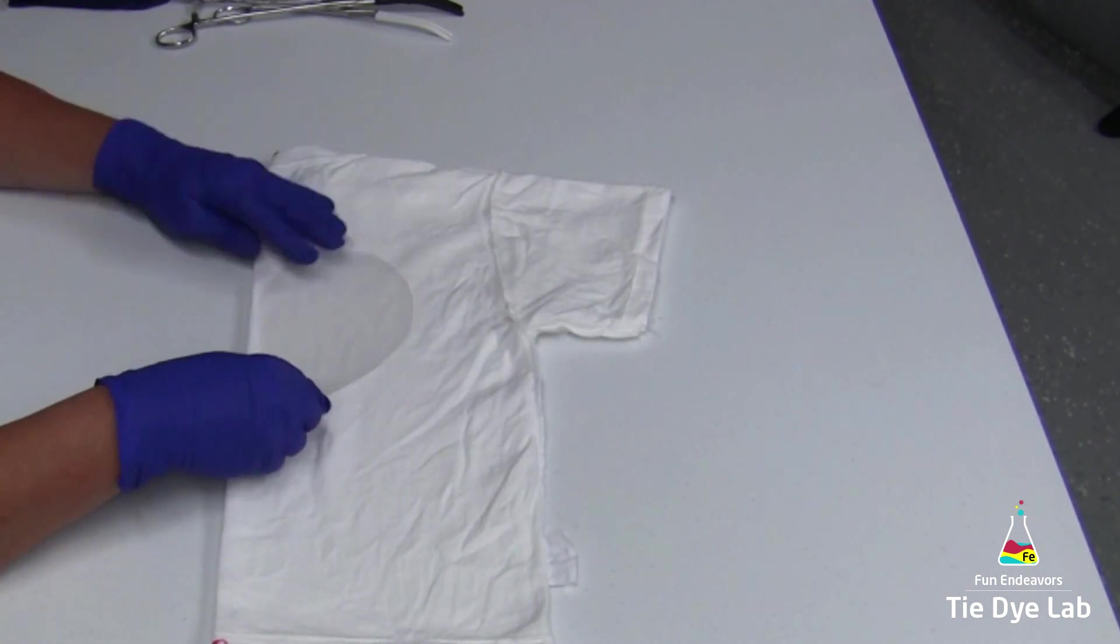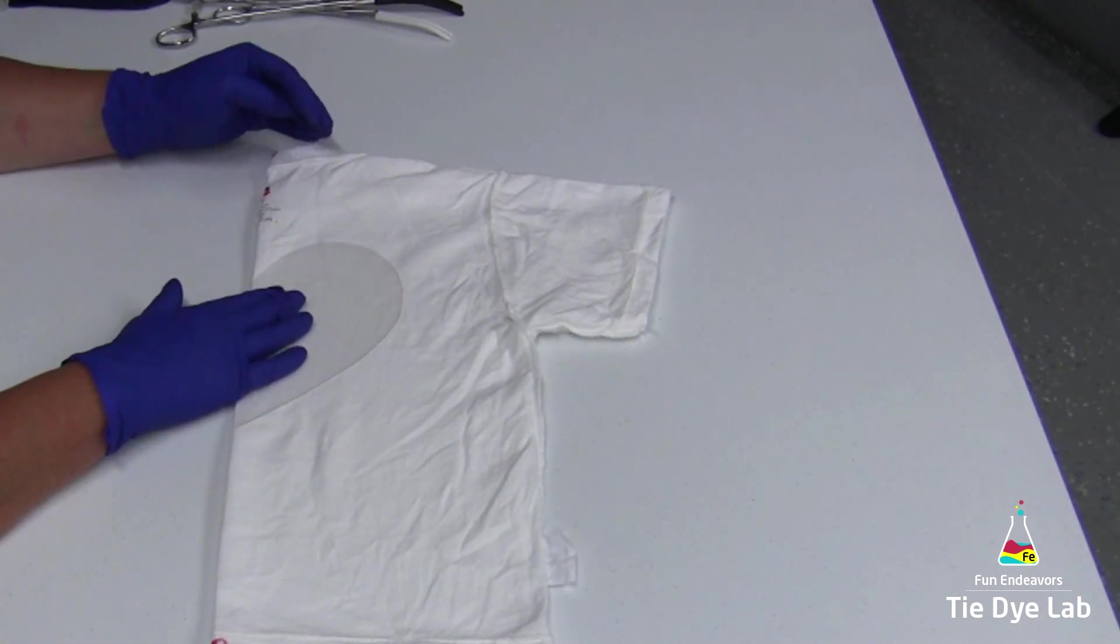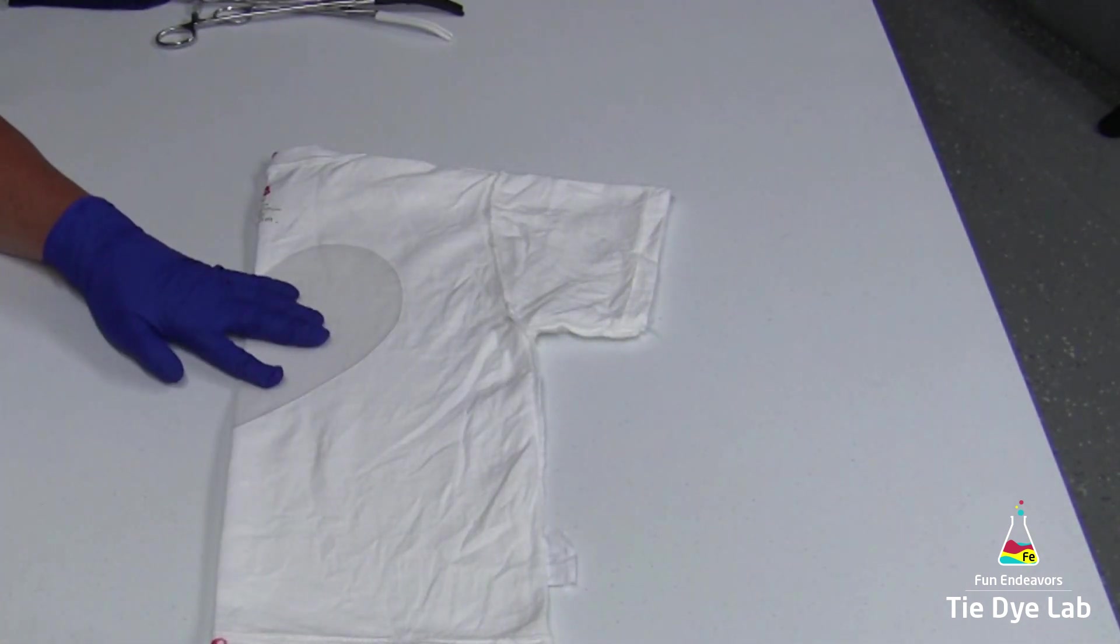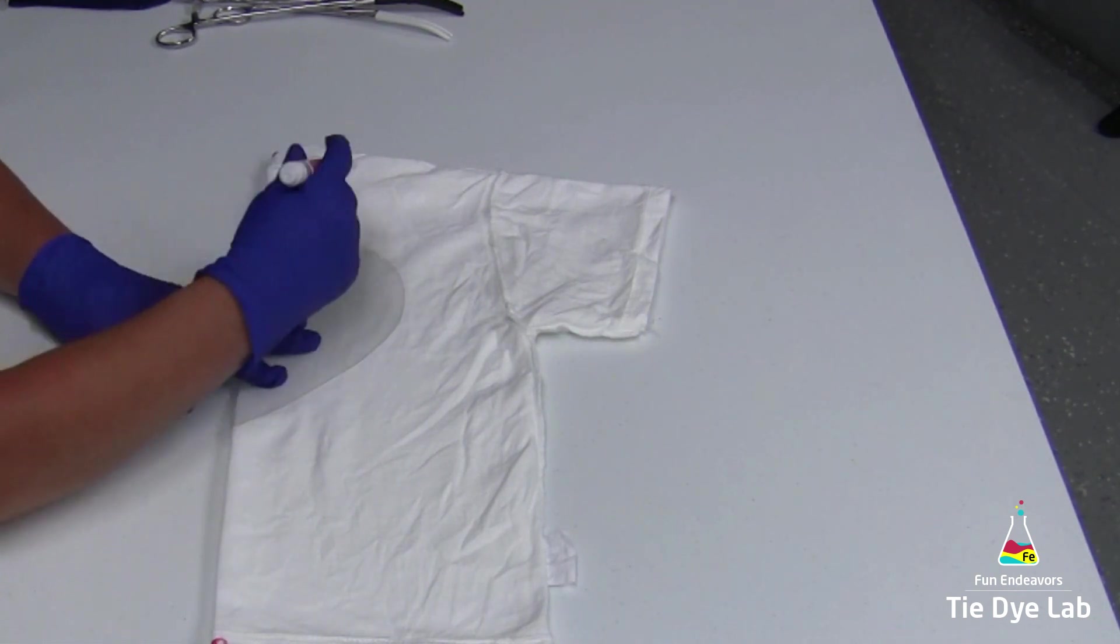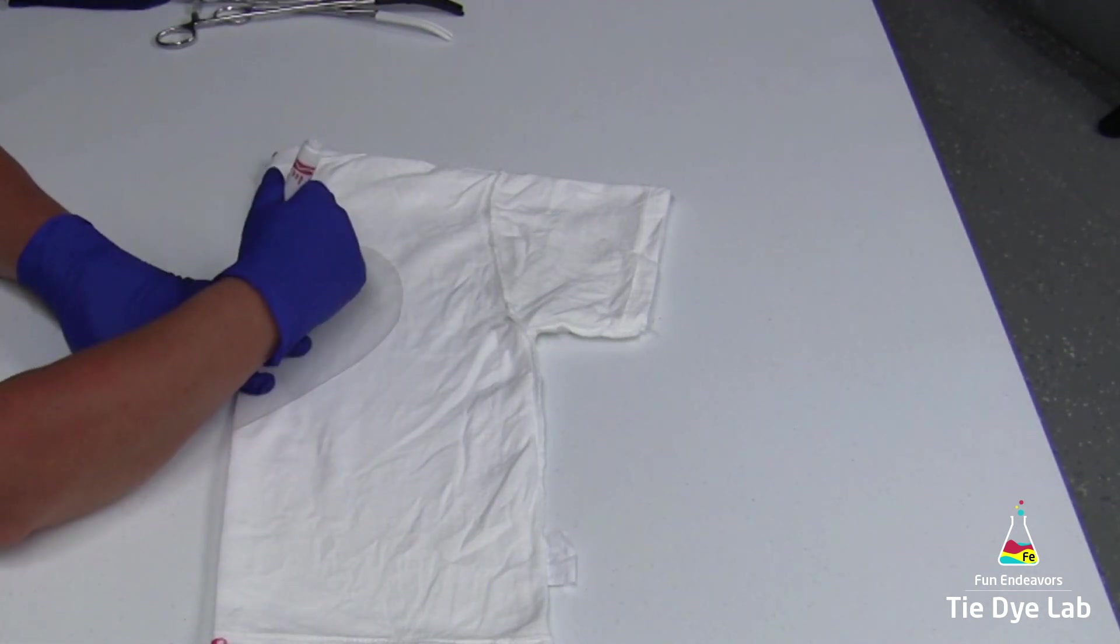Now it's time to draw the heart on the shirt. I have a stencil that I've cut out of a piece of plastic cutting board, and I'm just going to use a washable marker and trace around that stencil.